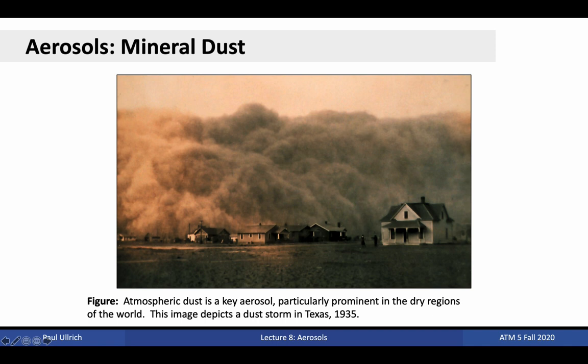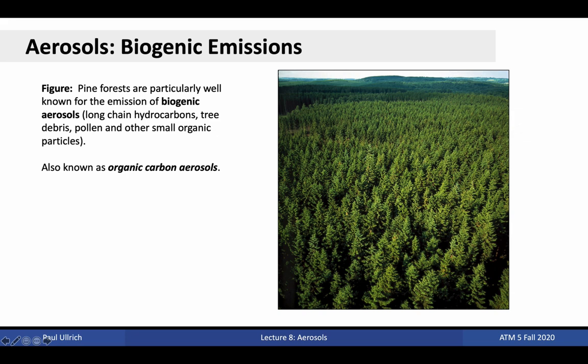Let's discuss the different types of aerosols. Mineral dust is a key aerosol species that is particularly prominent in the dry regions of the world, consisting of small grains of dust, dirt, and sand. The image here depicts wind-blown dust from a dust storm in Texas in 1935. Aerosols can also come about naturally from biogenic emissions — compounds naturally released from vegetation and forests — including long-chain hydrocarbons, tree debris, pollen, and other small organic particles. These aerosols are known as organic carbon aerosols.